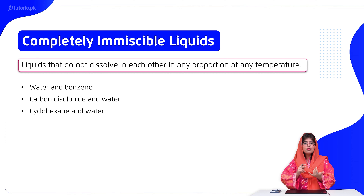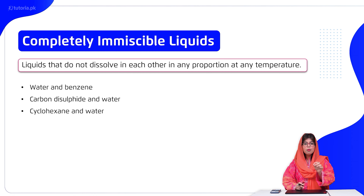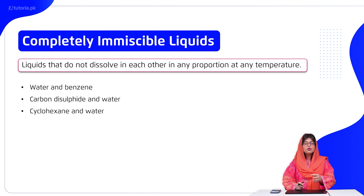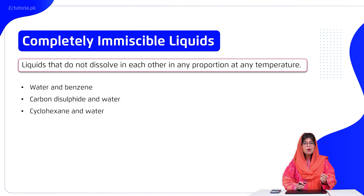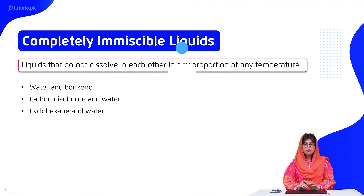Students, completely immiscible liquids are those that don't have any sort of polar or non-polar interactions with each other. For example, water and oil are completely immiscible, and similarly cyclohexane and water are completely immiscible.